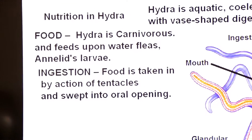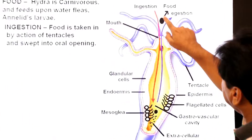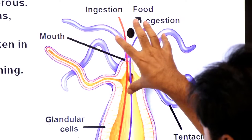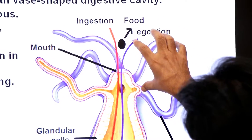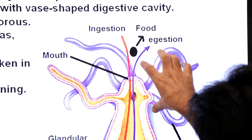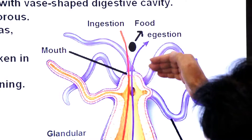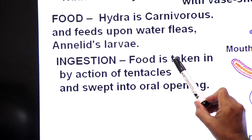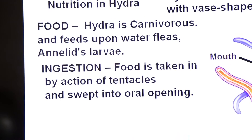The first step in holozoic nutrition is ingestion. Hydra's mouth is surrounded by a cluster of tentacles. These tentacles first capture the prey, then bend and sweep the food through the mouth. Food is taken in by the action of tentacles and swept into the oral opening.